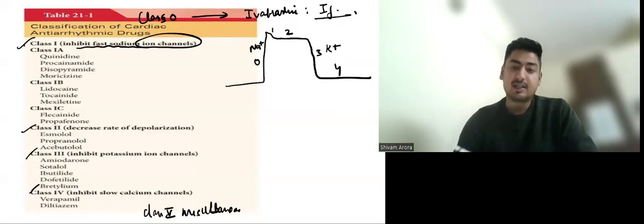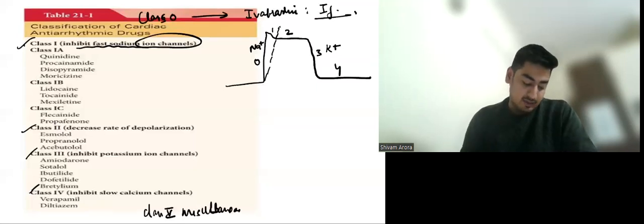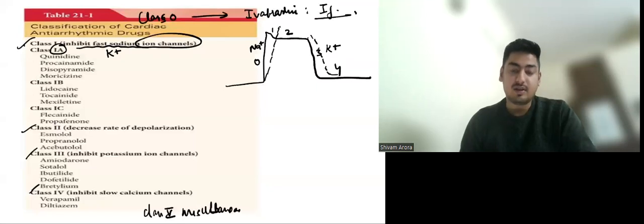So class 1 antiarrhythmics block sodium channels. So all of them will delay depolarization definitely. Out of them, class 1A also blocks potassium channels. So when they block potassium channel, they will also delay repolarization. So they will prolong QT.